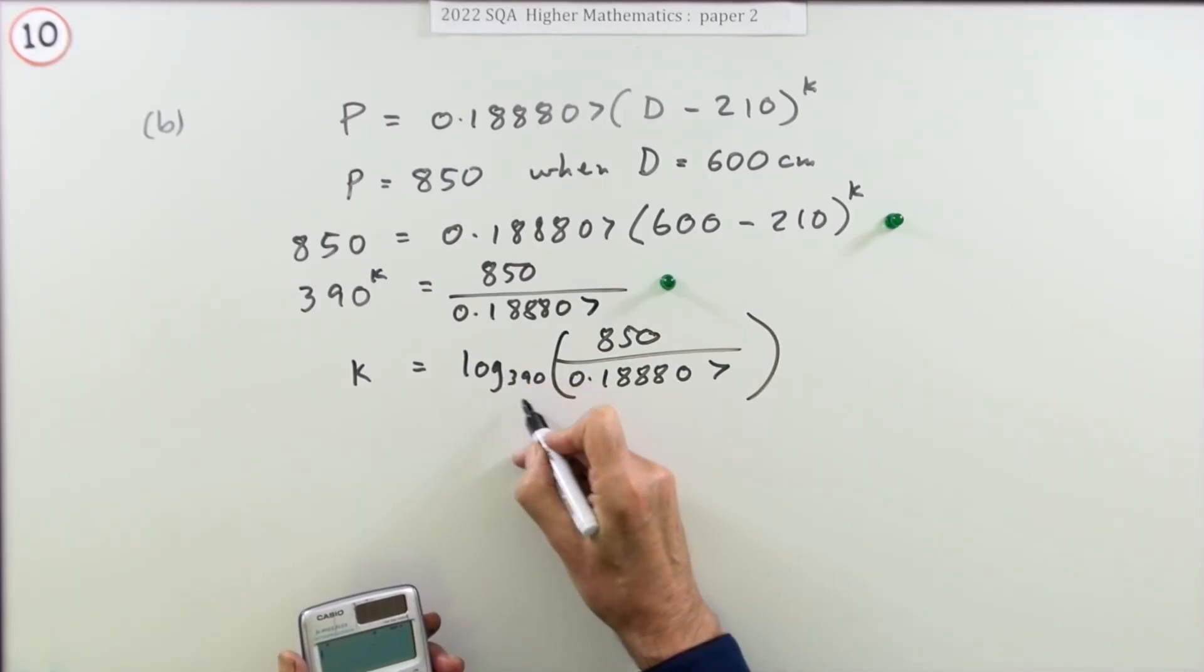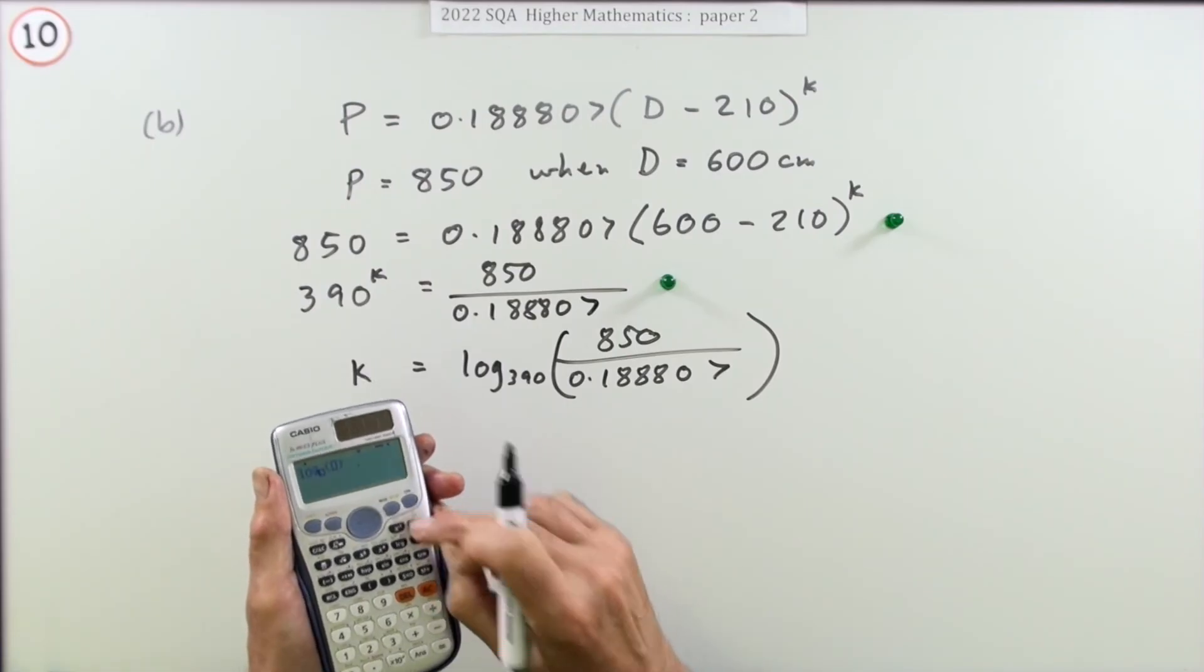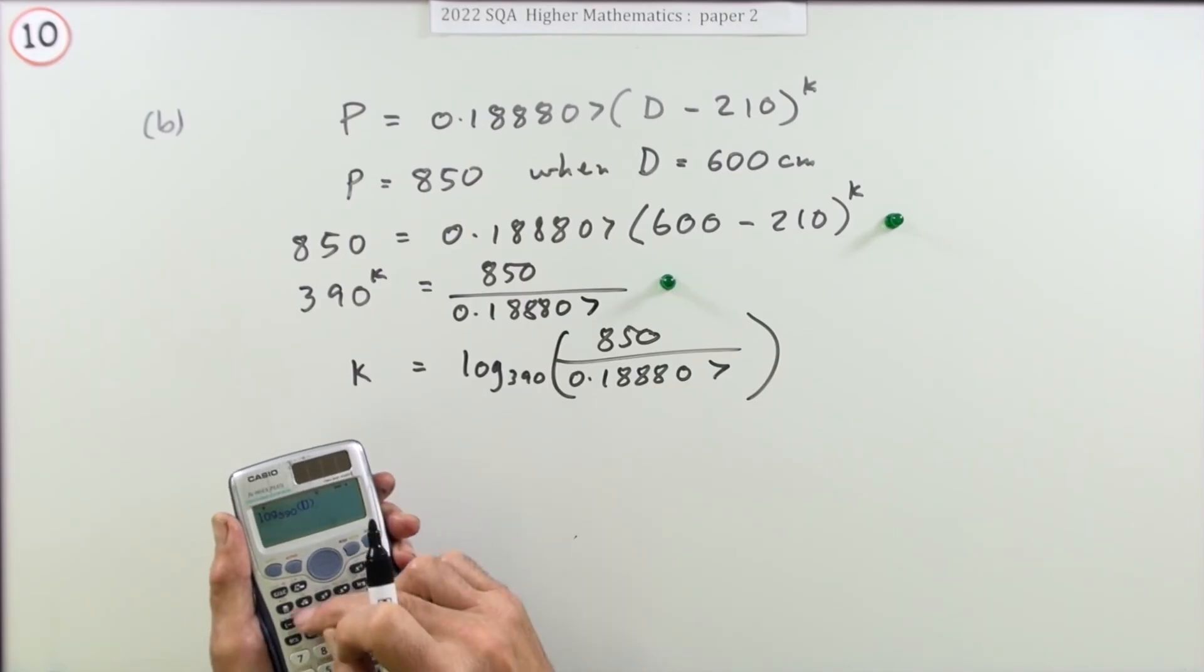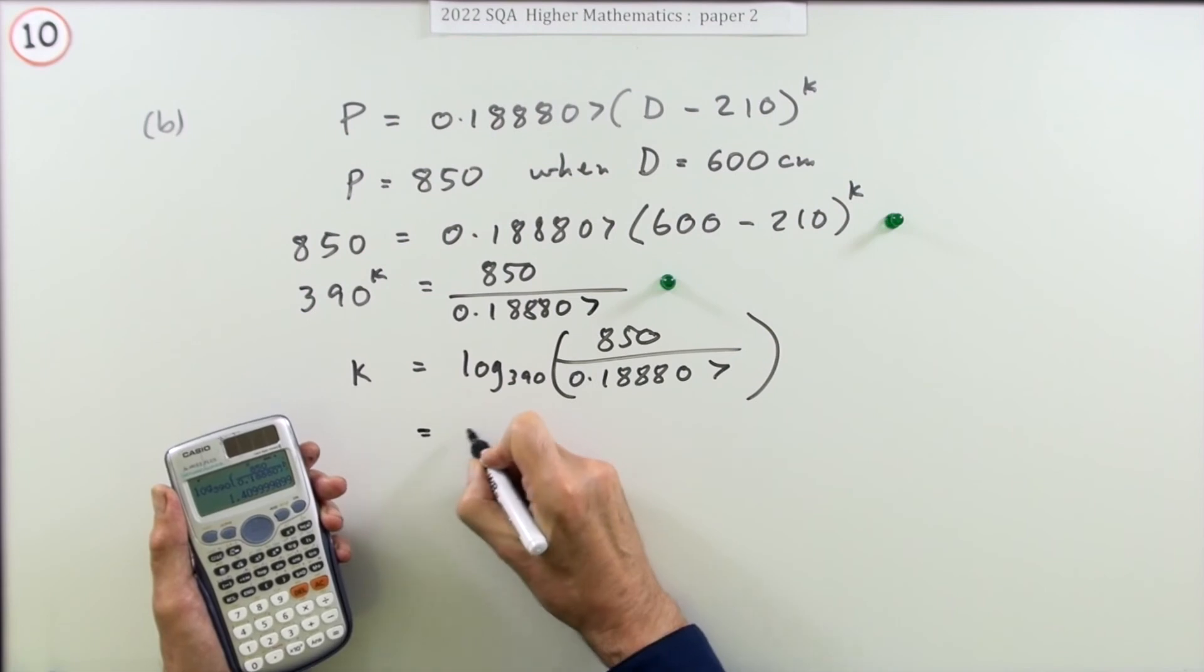Even though that might look odd, log base 390, there's a button which gives you the logarithm of any base. So just put in 390 and then the fraction, press the button, and you get 1.40999 and so on.